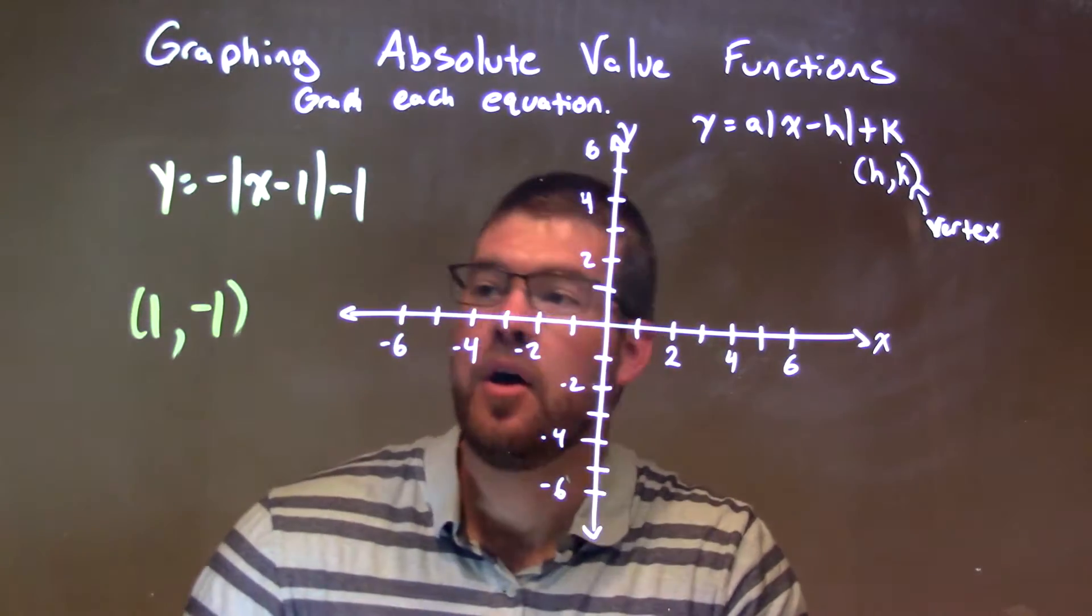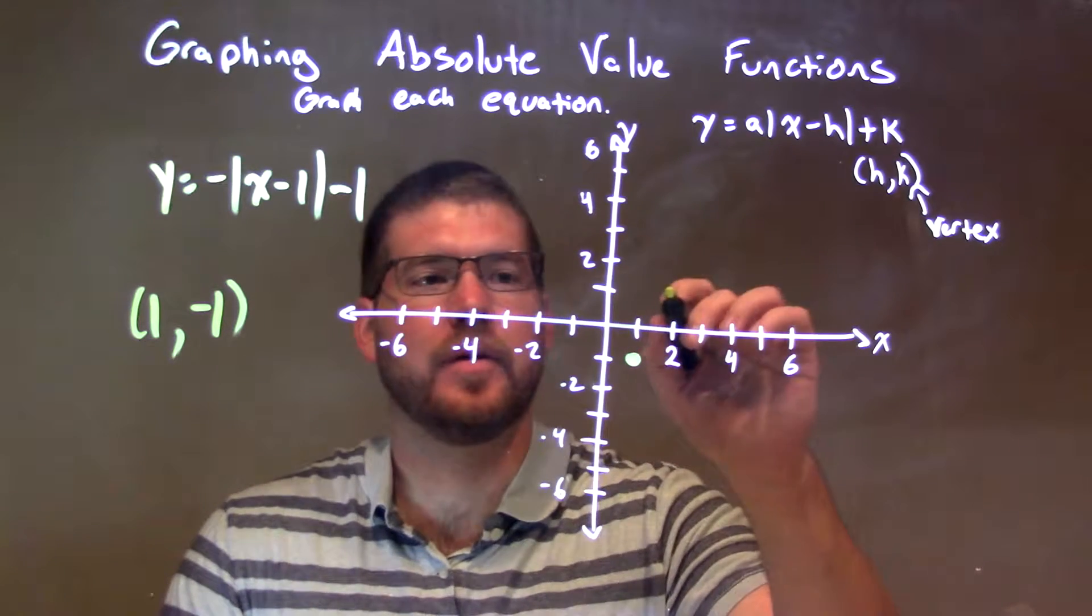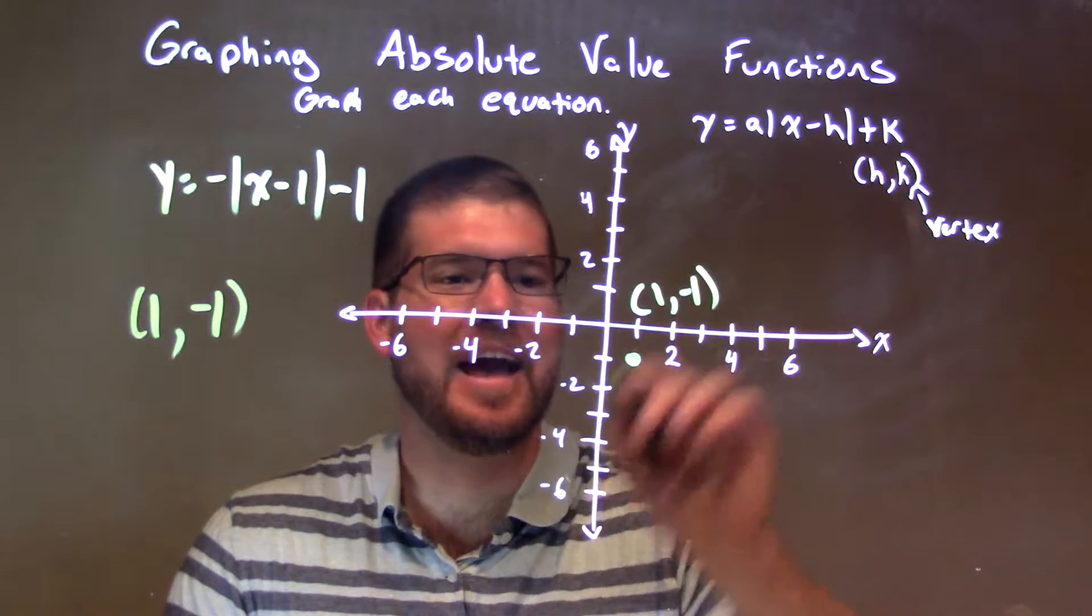So our vertex is just 1, negative 1, right? So we have 1, negative 1 right there. Let's write that down, 1, negative 1 as a vertex.